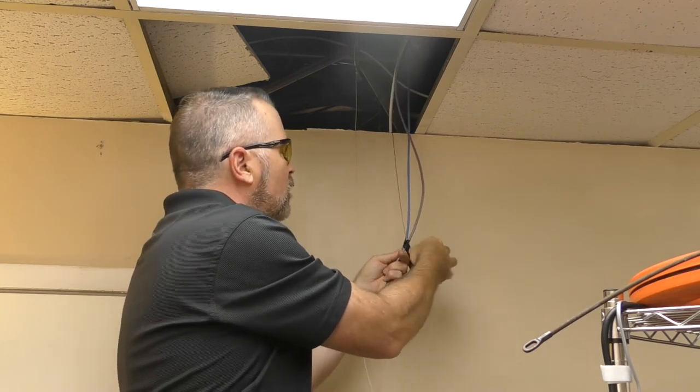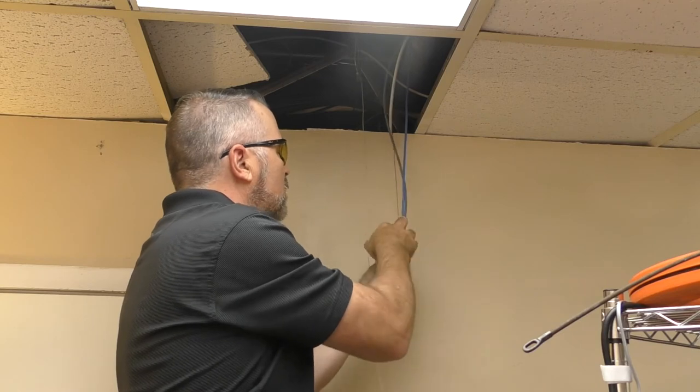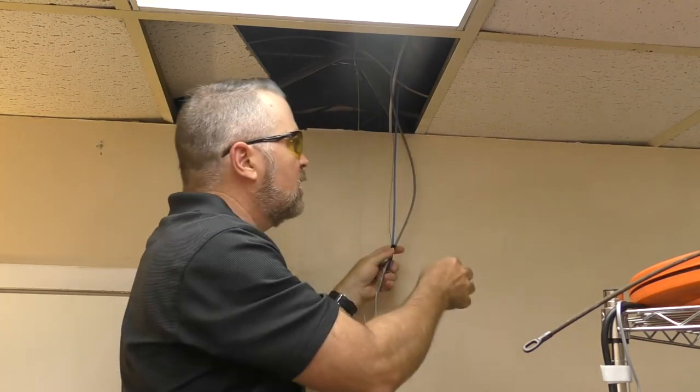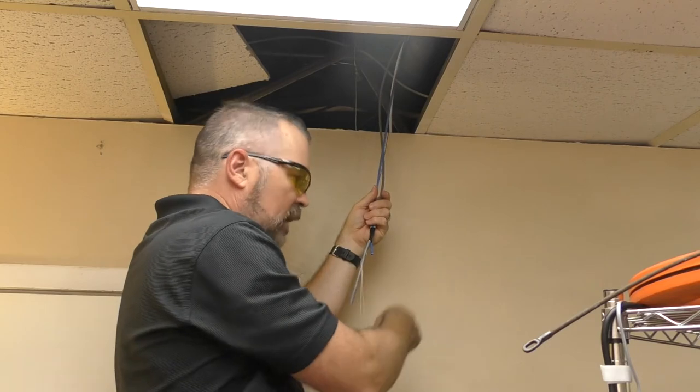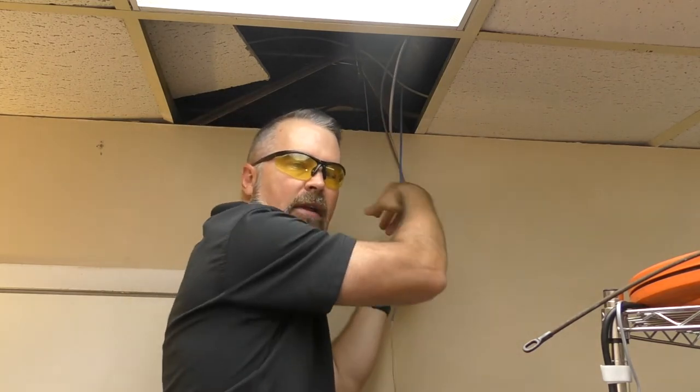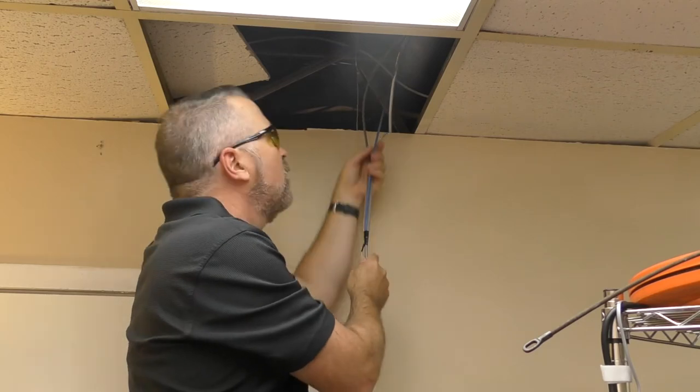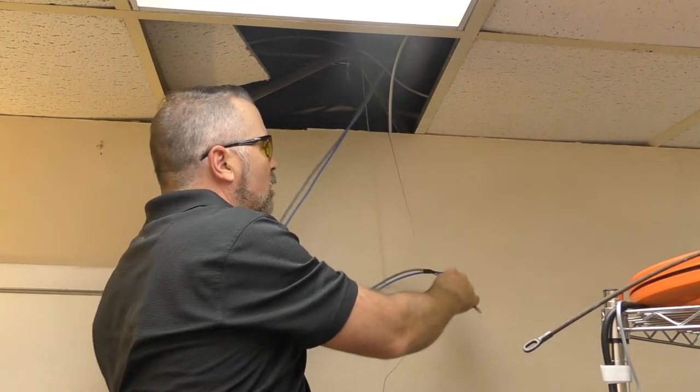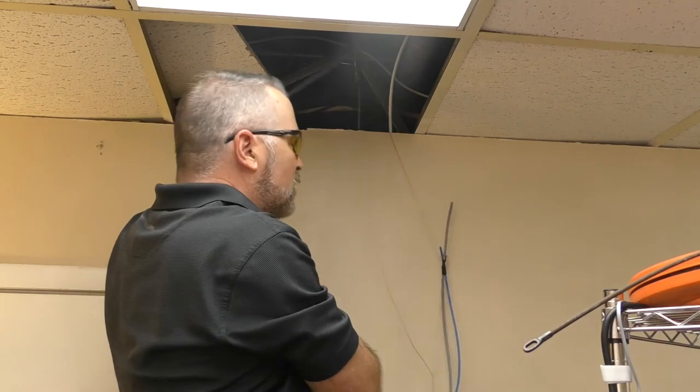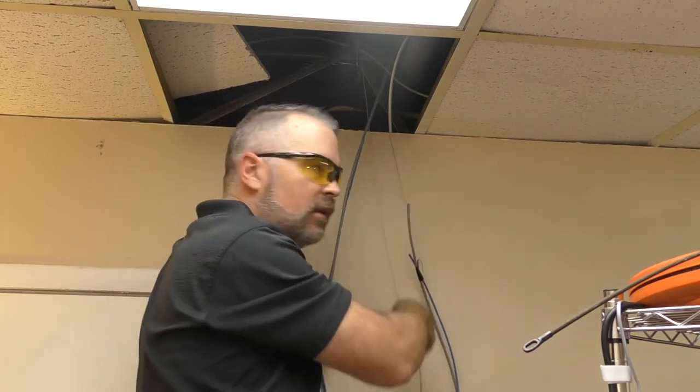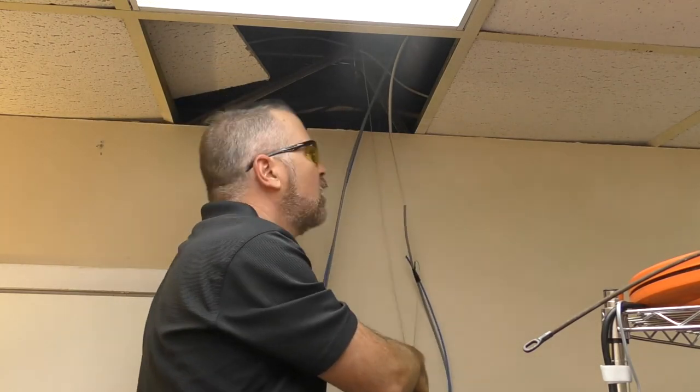And then just go down and pull your string. Now make sure though that when you do that, that you've got some slack on the cable in the ceiling. Because if you're trying to pull with the string, if you're trying to pull the whole entire cable from all the way at the far end, there's going to be too much resistance, the string will come off. So make sure you've got at least enough, probably about six foot of slack or eight foot of slack so that when you start pulling the string, there's no resistance as it pulls all the way down the bottom.